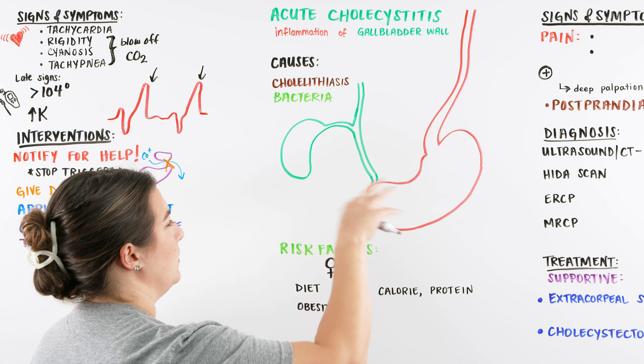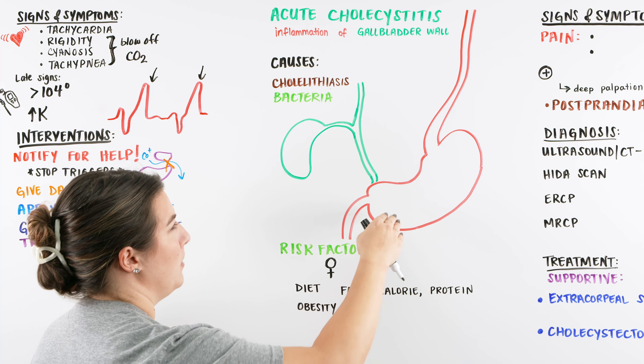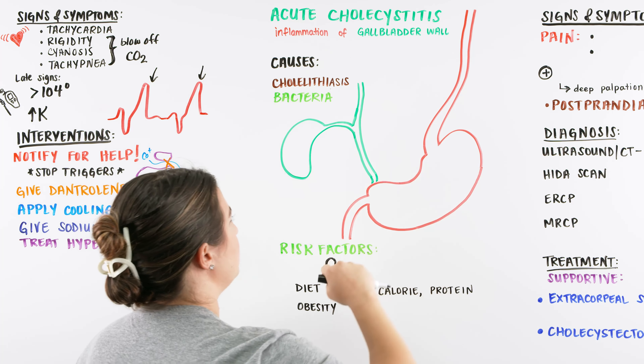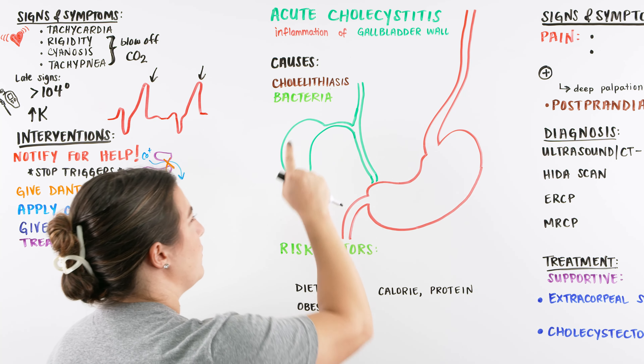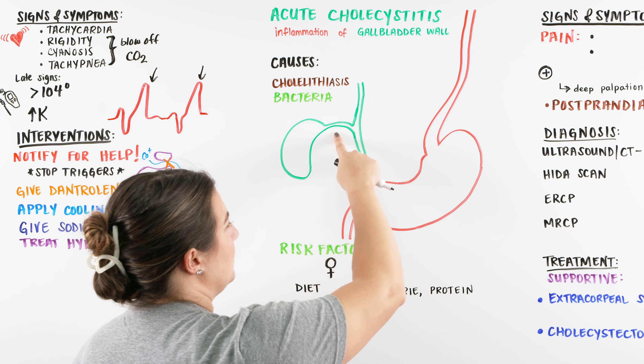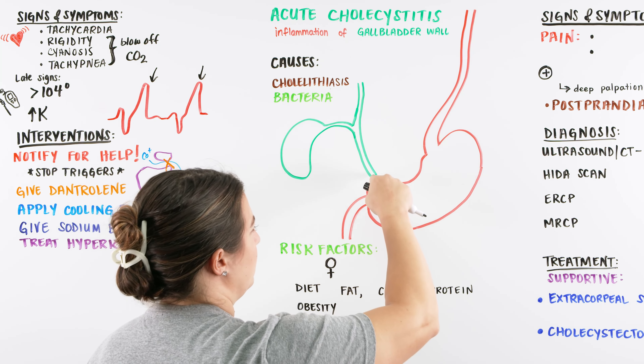Right here I have drawn up our stomach, we have our esophagus going into our intestines, we have our gallbladder here, our cystic duct, and our common bile duct.